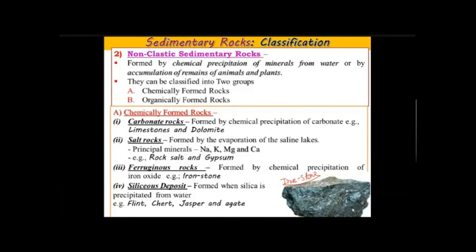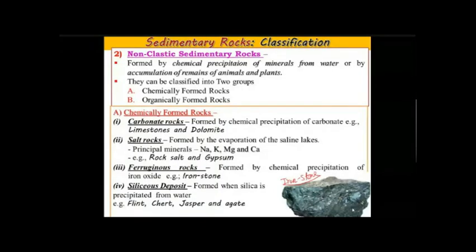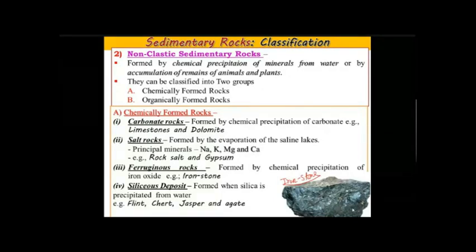Chemically formed rocks are those generally formed by the chemical precipitation of carbonates — for example, limestone and dolomite. Organically formed rocks use the bodies of plants or animals as the sedimentary material.